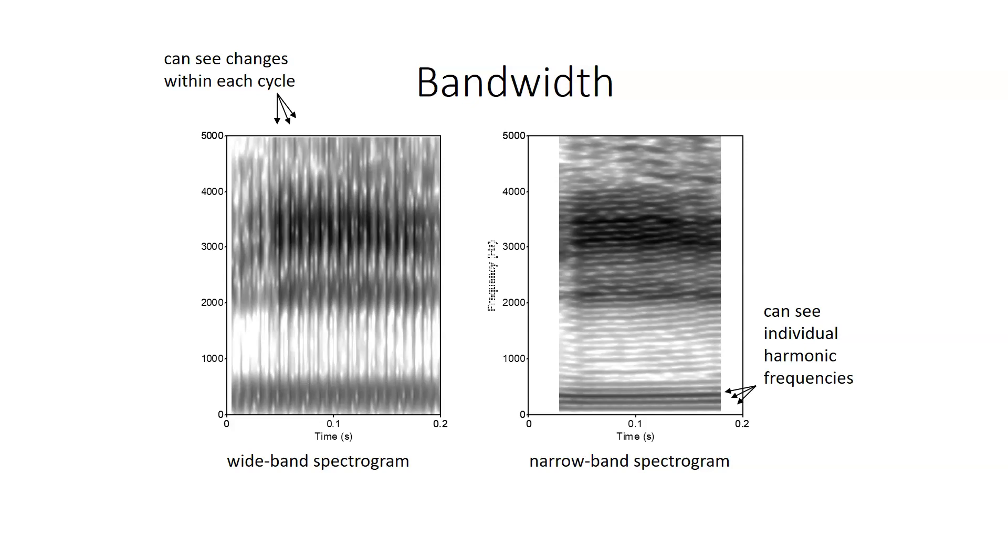If we were to use a narrowband spectrogram and get much finer frequency resolution, what we end up seeing is the individual harmonic frequencies that are present in phonation, phonation being a harmonic series that we'll talk about later in the course.